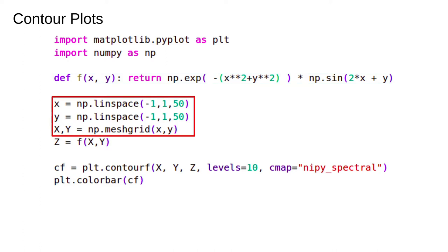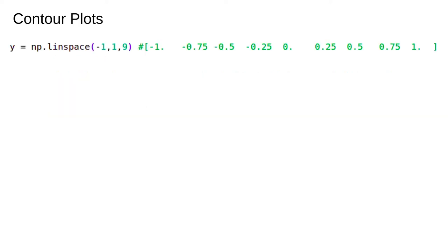This part is a bit complicated. If you haven't seen it yet, the numpy linspace function just returns 50 evenly spaced samples between minus 1 and 1. The complicated part is meshgrid. If we show the output it should be clear what's going on. Let's use an example with fewer points for clarity. The list shown in green is the output of linspace with nine samples.